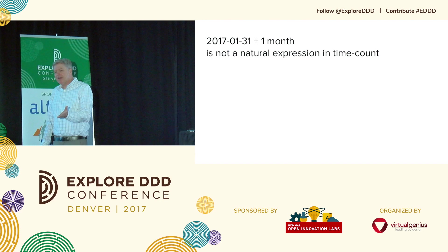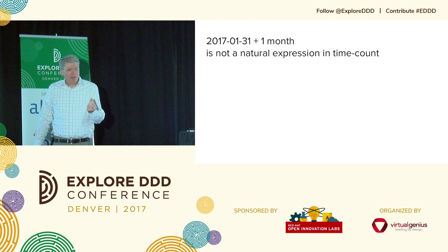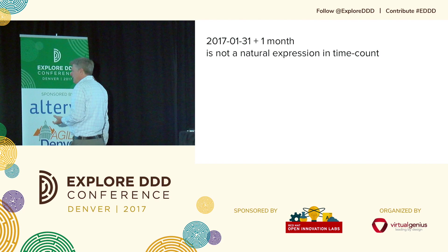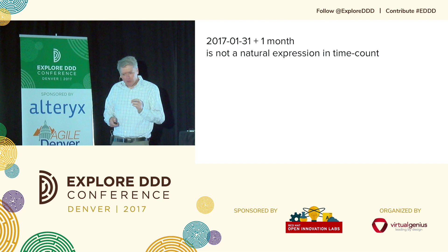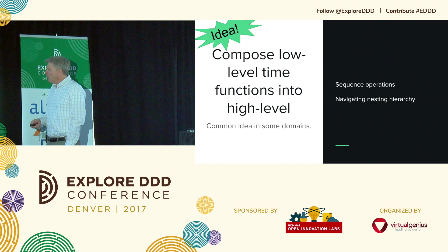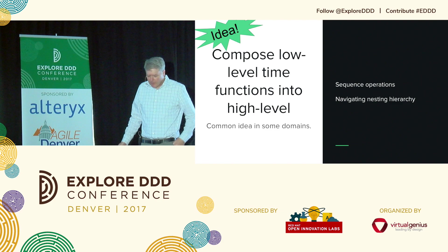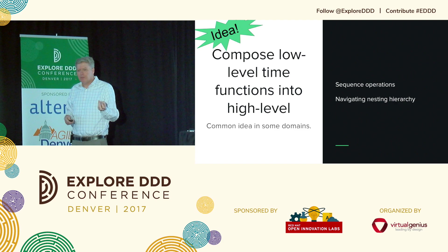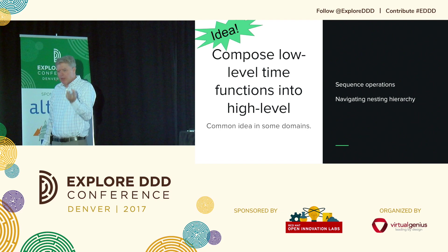Adding a month to a day is not a natural expression in this system — which might be okay, because it turned out to have weird edge cases anyway. So maybe if you don't need it, it's okay not to have it. Here's another thing I really wanted in my time library: you could take low-level elements and compose them to make more elaborate ones. So we have sequence operations, nesting, and navigating the nesting hierarchy. You could implement something kind of like plus in JodaTime — I'll call it 'later' — in one line of sequence code.